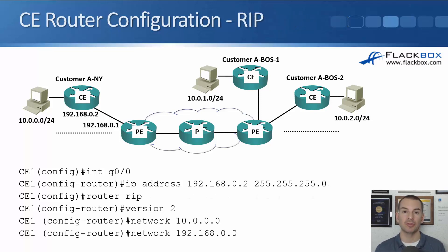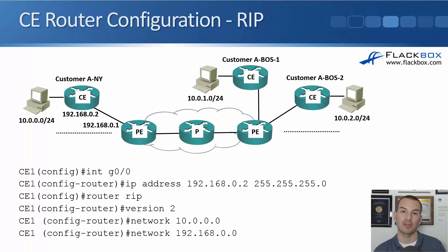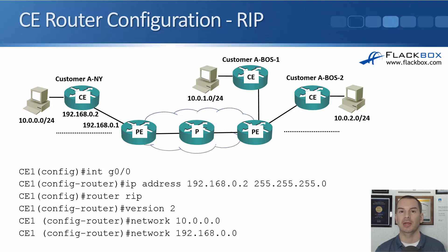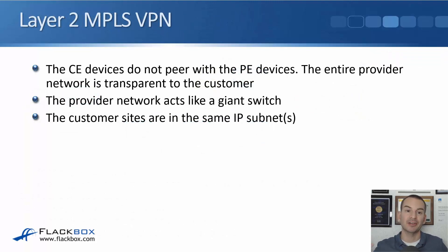We can use static routes or an IGP. Using RIP as a simple example: on the CE, configure interface GigabitEthernet 0/0 with IP address 192.168.0.2 /30, then router RIP version 2, network 10.0.0.0 to advertise internal networks, and network 192.168.0.0 to enable RIP on the interface facing the PE. Internal routes will be advertised to the other sites in Boston, and you'll also learn about those sites with a next hop of 192.168.0.1. All different routing protocols are technically supported, but service providers often limit which ones they support to simplify operations.